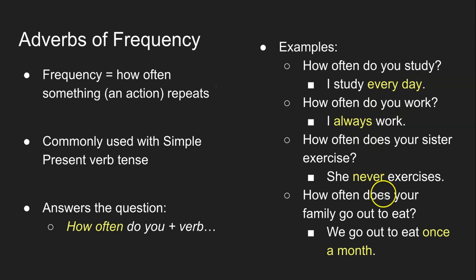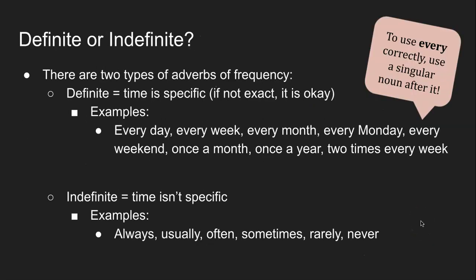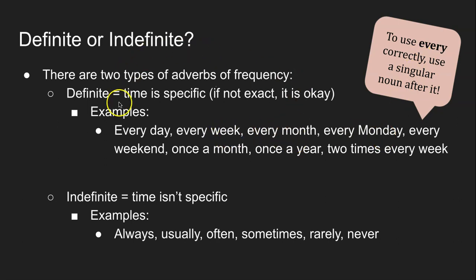The adverbs of frequency are colored so that you can see them clearly. There are two types of adverbs of frequency. We have the definite adverbs of frequency — this means the time is specific. We at least understand the time. For example: every day, every week, every month, every Monday, every weekend. After 'every,' you want to use a singular noun — like every Monday, every month, every week.